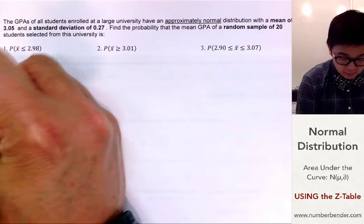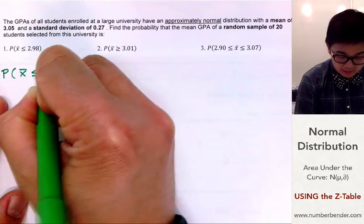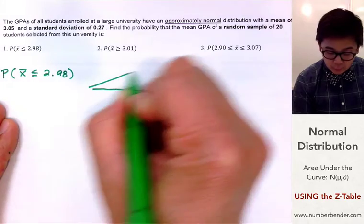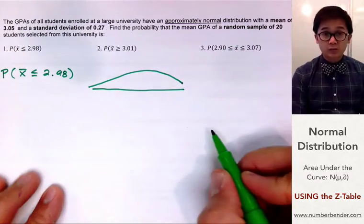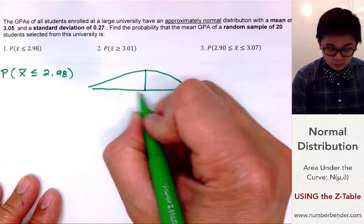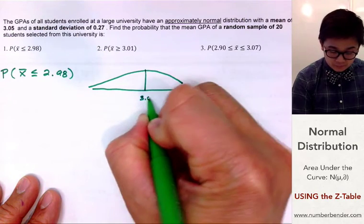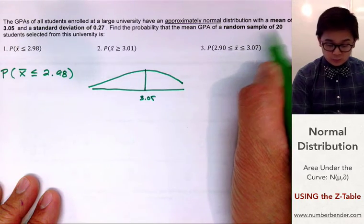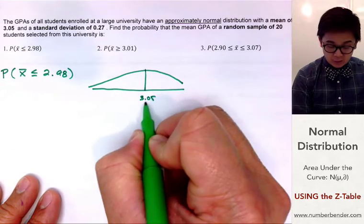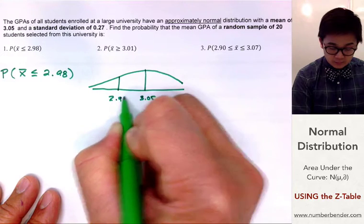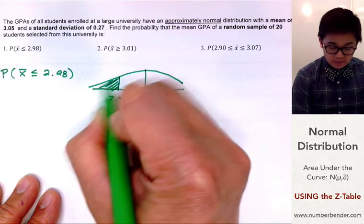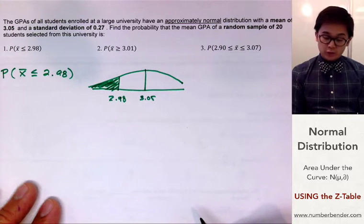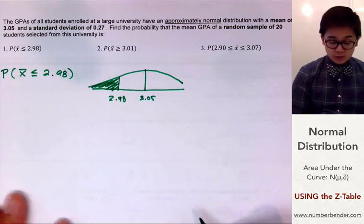For problem number one, we need to find the probability that the mean GPA is less than or equal to 2.98. To illustrate the normal curve — since it's approximately normal — the mean will be in the middle at 3.05. We need to find the probability that the sample mean of the 20 students is below 2.98, which is below 3.05. To solve this using the Z-table, we need to use the Z-score formula.